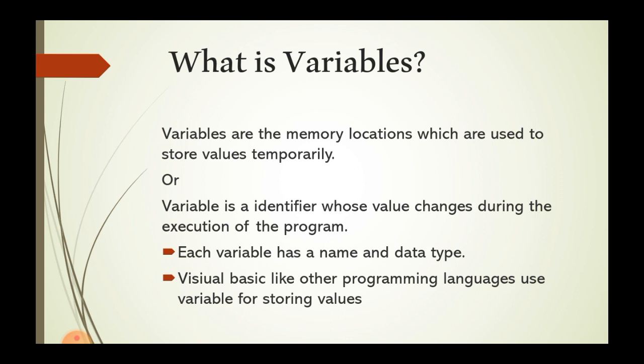A variable is an identifier whose value changes during the execution of the program — meaning we can change the variable value during execution. Each variable has a name and a data type, similar to other programming languages.